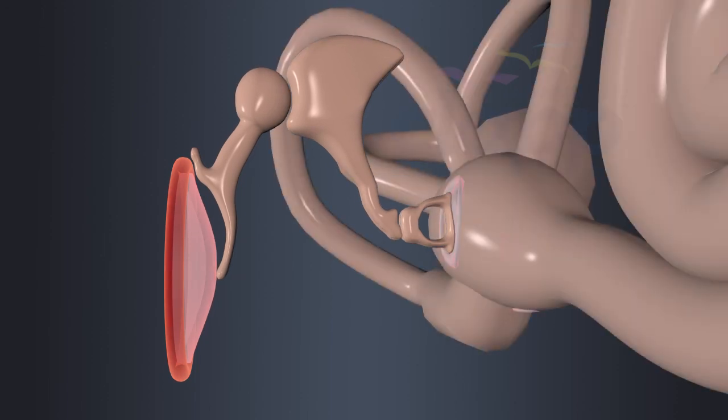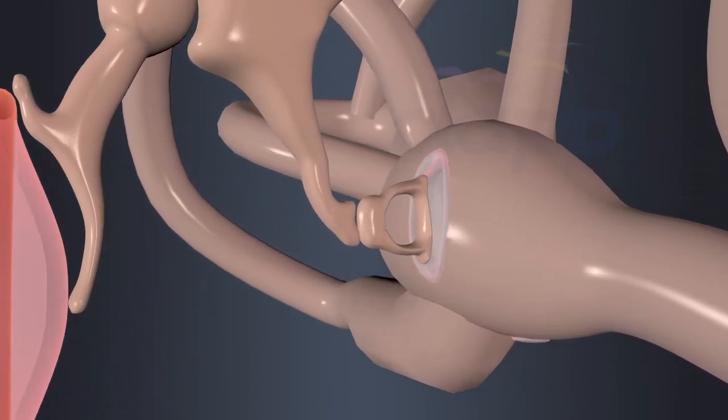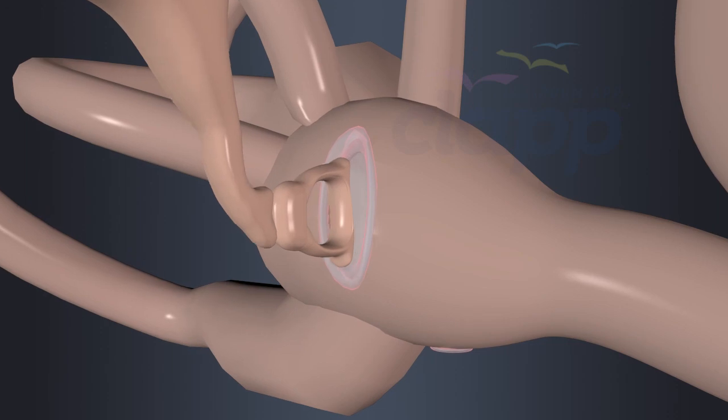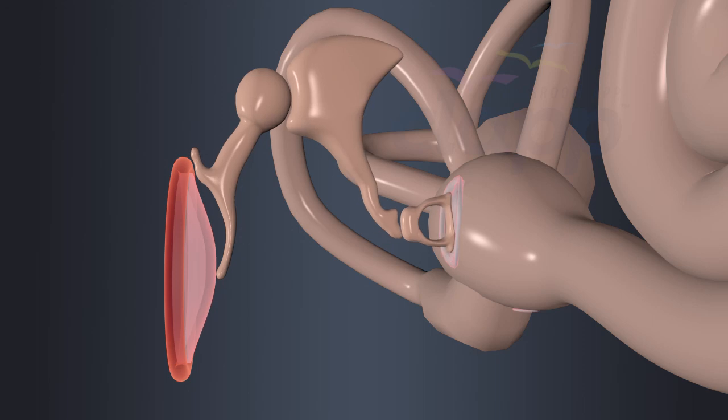The ossicles amplify and relay the vibrations from the eardrum to the oval window. While transmitting, bones in the ossicles amplify these sound vibrations. Normally, it amplifies up to 20 times higher than what they receive in the malleus.